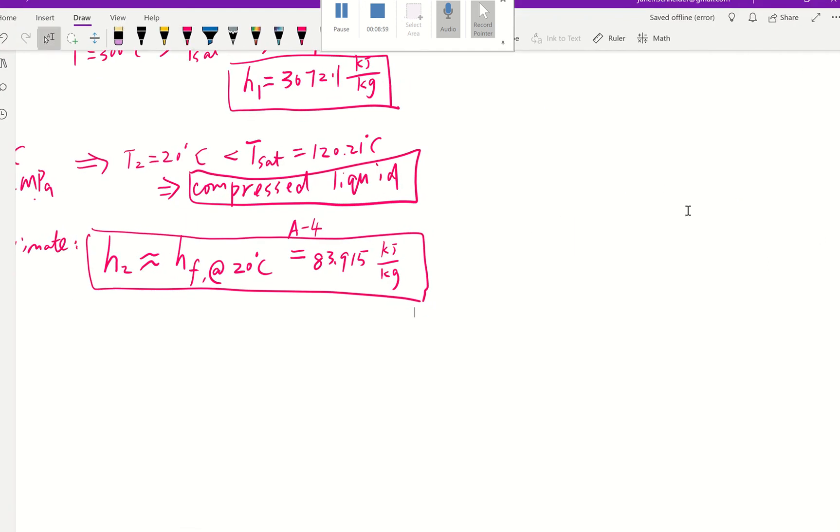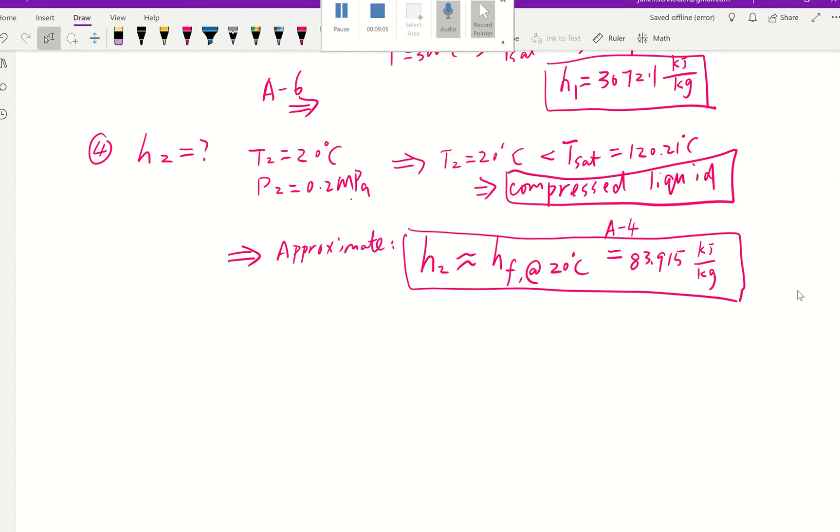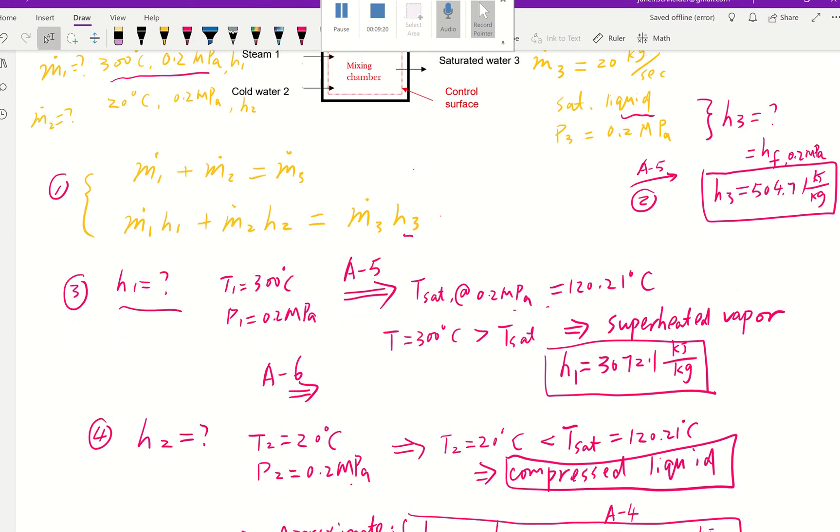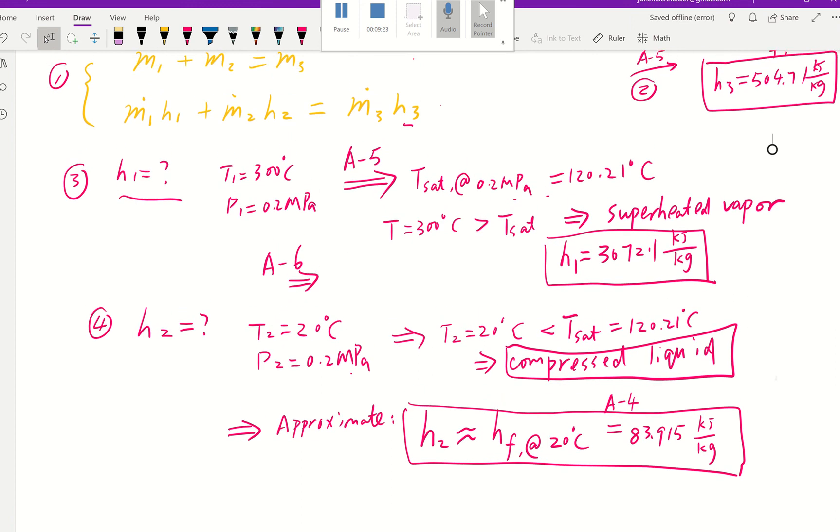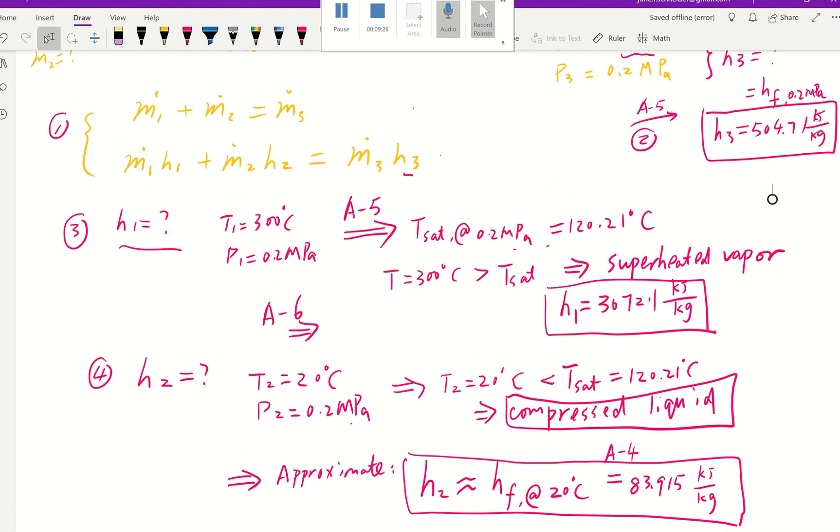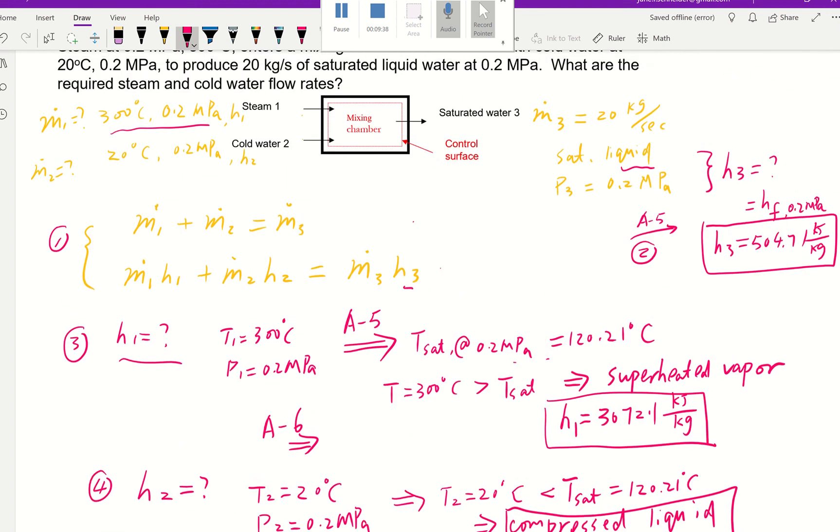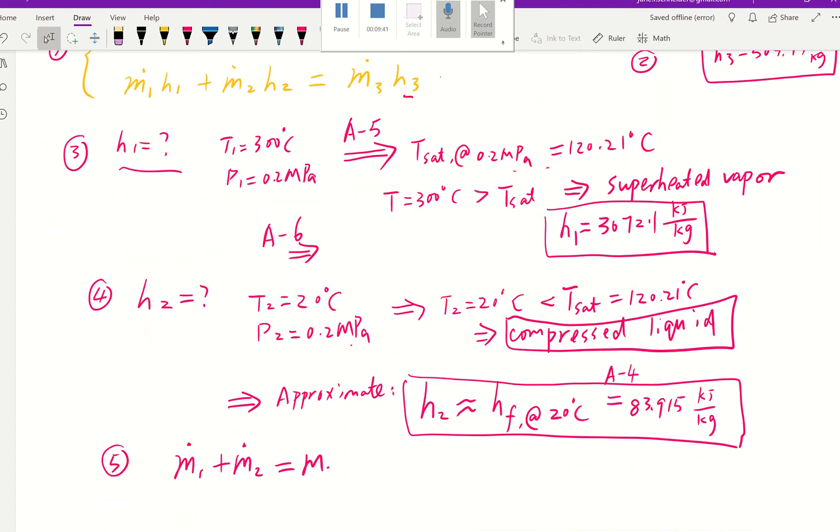So so far what we have done is we looked at this governing equation, figured out the mass and energy conservation, and since each state we know two properties, we found their individual enthalpies: h₃, h₁, and h₂. Now we're ready to put those enthalpies back into those equations. Step 5, we'll have ṁ₁ + ṁ₂ = ṁ₃, and we know ṁ₃ is 20 kg/s.